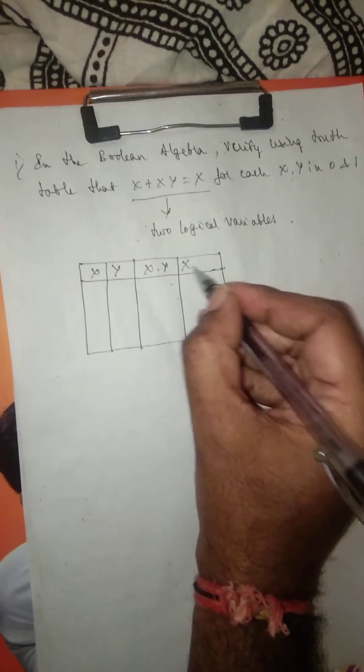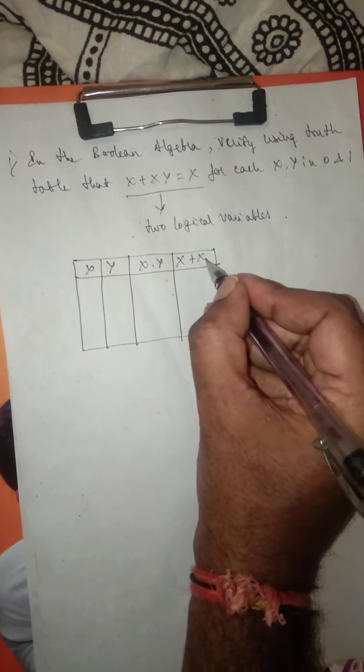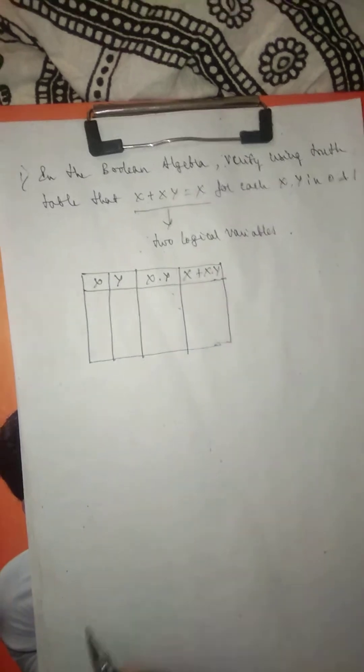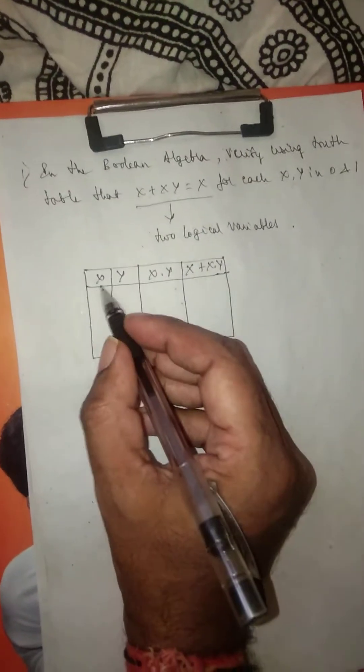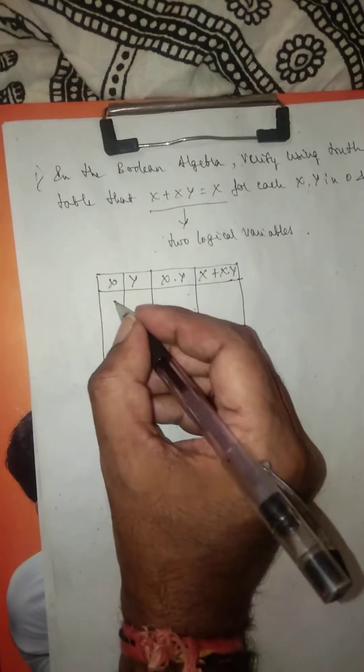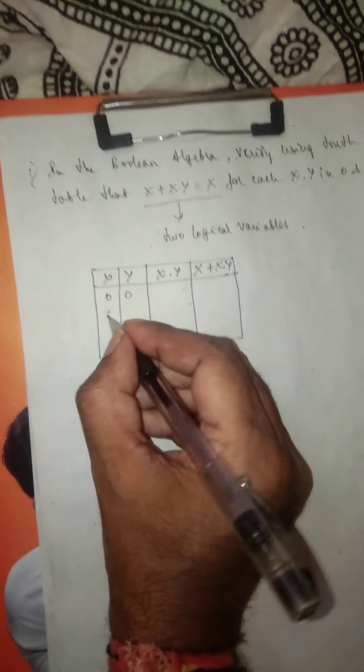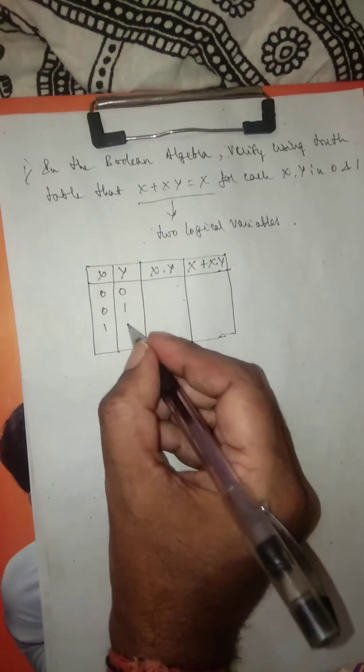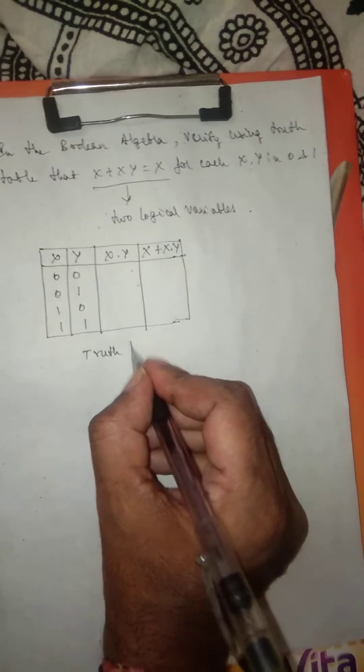I will write the logical variables: x, then y, then x·y, and then x + (x·y). The possible combinations of x and y are: 0,0 — 0,1 — 1,0 — and 1,1. These are all the possible combinations in this truth table.